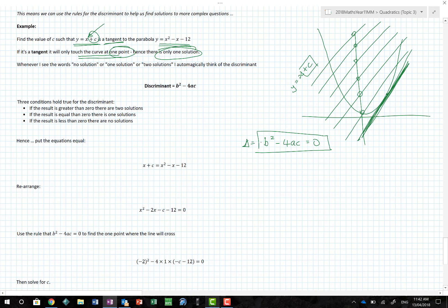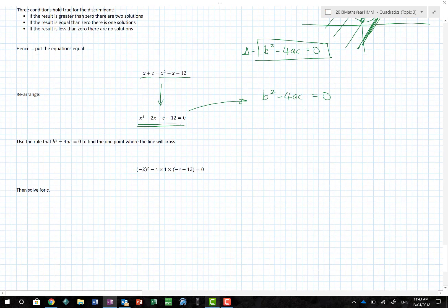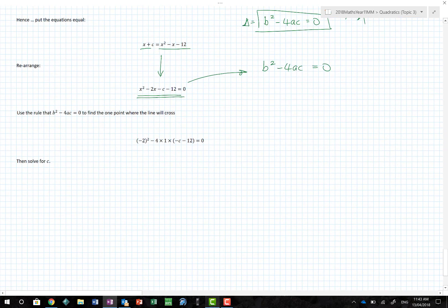I'm looking for where they touch. When they touch, what do I know about the two equations? At that one point, the two y values are the same, which means I can equate those two equations. Here is my first equation, x squared minus x minus 12, and here is my second equation. At that one point where they touch, I can now rearrange it. There is my quadratic equation. I now need to find the values of c. Because I can't solve that with x's and c's, I have to use my discriminant. I know that b squared minus 4ac must be equal to 0 for it to have this one solution to be a tangent.